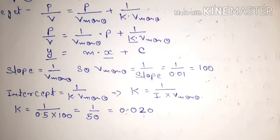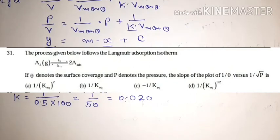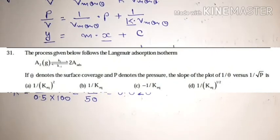The next question is from GATE 2015. The process given follows Langmuir adsorption isotherm: A₂ converts into 2A. If θ denotes surface coverage and p denotes pressure, find the slope of the plot of 1/θ versus 1/√p. You have four options.